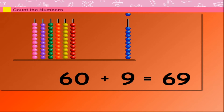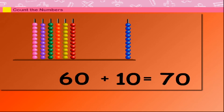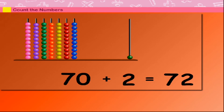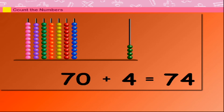60 plus 7 is equal to 67. 60 plus 8 is equal to 68. 60 plus 9 is equal to 69. 60 plus 10 is equal to 70. 70 plus 1 is equal to 71. 70 plus 2 is equal to 72. 70 plus 3 is equal to 73. 70 plus 4 is equal to 74. 70 plus 5 is equal to 75.